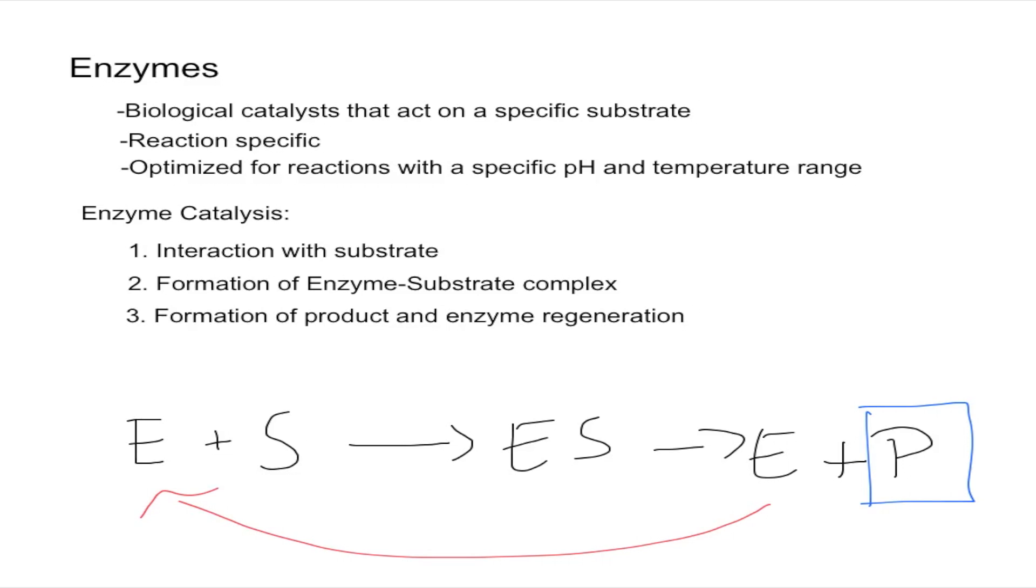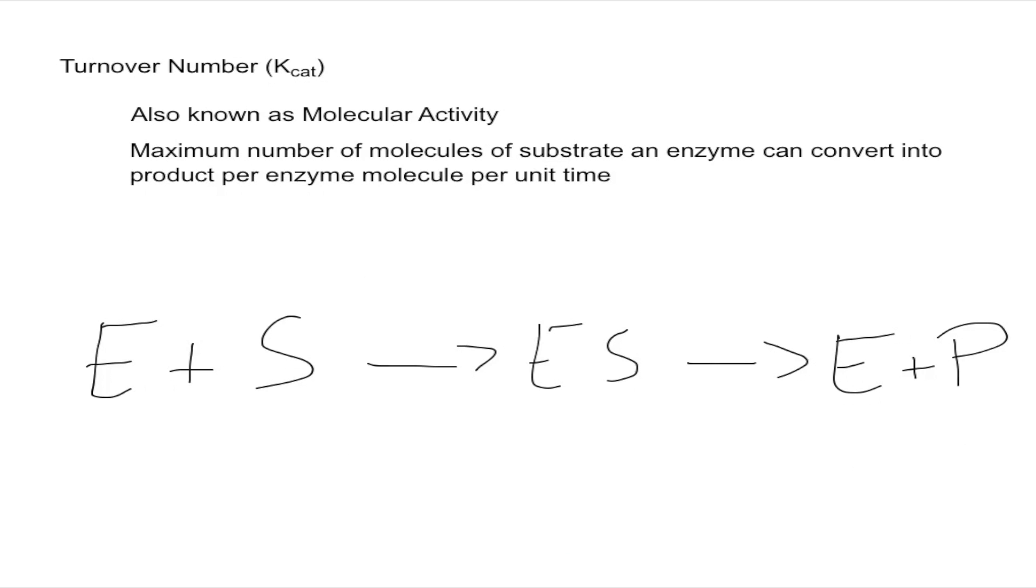One final thing I wanted to talk about was the turnover number. This just measures the activity of the enzyme. The turnover number is written as Kcat, so that's the K of catalysis. And it's also known as the molecular activity of the enzyme. Its definition can be a little complicated to understand first, but let's try to break it up.